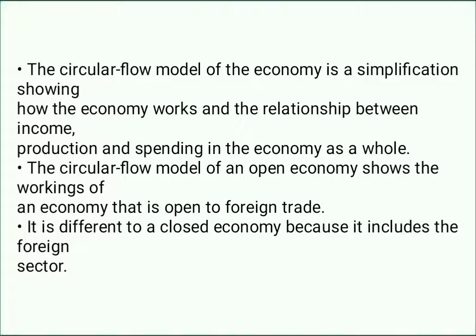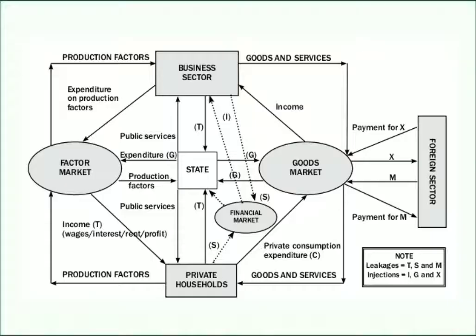This is how the open economy circular flow actually looks. In the middle you can see the states; the foreign sector is a little bit outside. You can see the business sector, factor market, goods market, private households — and it is also shown here how it functions, where the state spends money, the financial market, and so on.